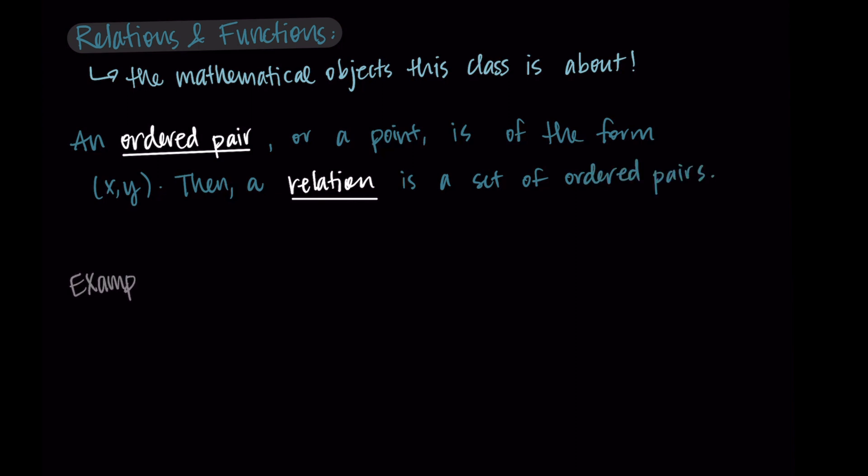Let me show you what this looks like with an example. We start with a set denoted using curly braces, and inside we have our points. I'll pick some: (1,1), (2,4), (0,10), and (3,4). This is a relation because it's a set in curly braces and it contains ordered pairs separated by commas.